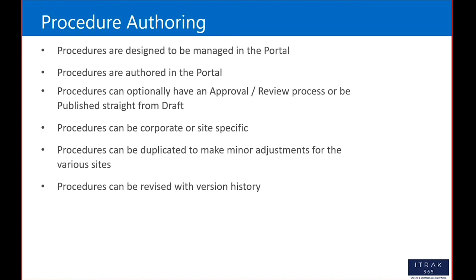Procedures can be revised with version history, because procedures are living documents that will likely need to be revised. When we're revising, what's available to employees is the published version, not the revision in draft. Once we publish the revision, it gets a new version number incremented by one, and the previous version is superseded and inactivated. It's no longer available for employees to review but remains in the back end for historical purposes.